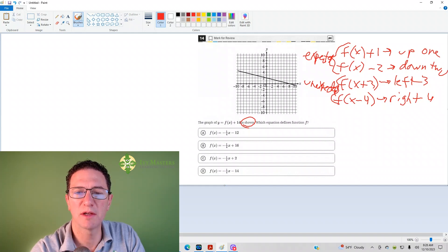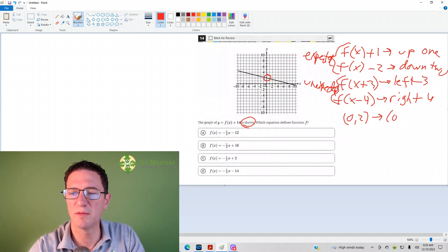So what I'm going to do here is I'm going to pick some points. It makes sense to pick the x and the y-intercept. So it looks like the y-intercept here is (0, 2). Now, if that moves down 14, then I'm going to have a new coordinate. It's going to be (0, negative 12).